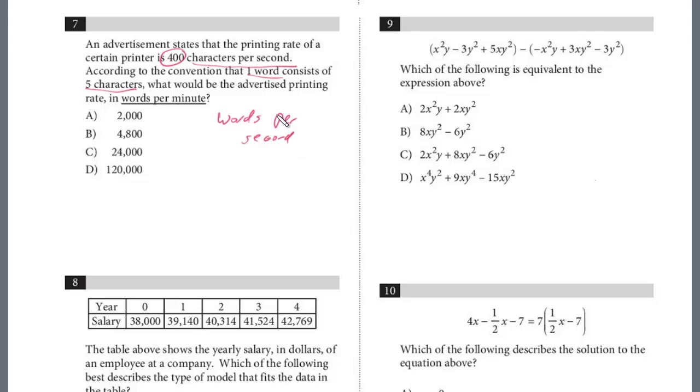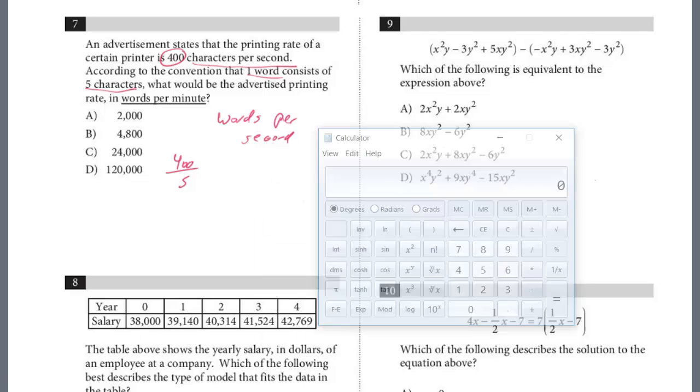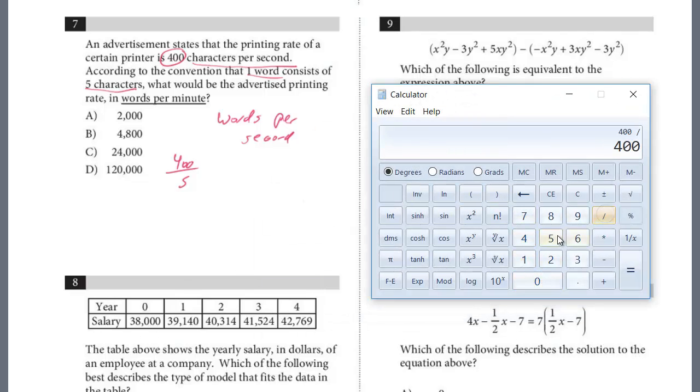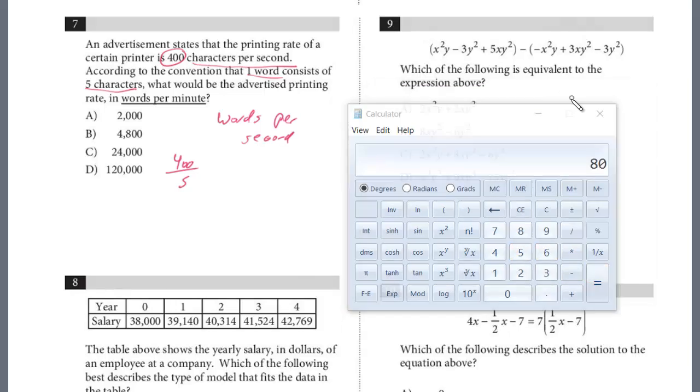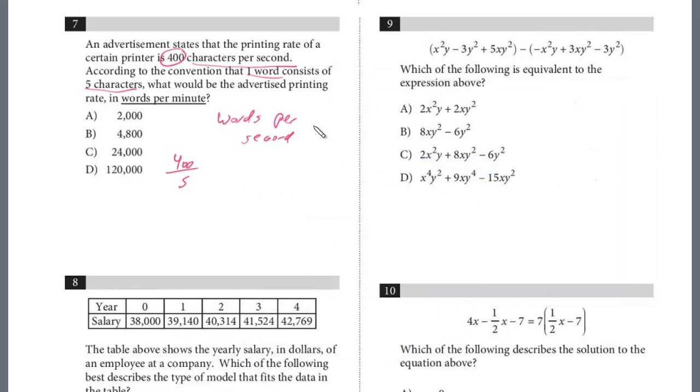We know 400 characters, so we're going to do 400 divided by 5. This is going to get us words per second, so 400 divided by 5, that is 80 words per second. The question is asking what would the advertised printing rate in words per minute be, so we just take this and multiply it by 60. That looks like 4,800, and the answer is B.